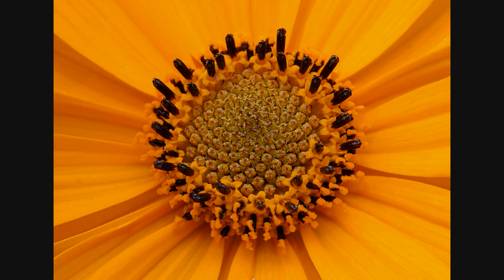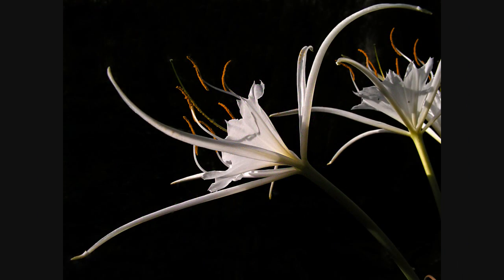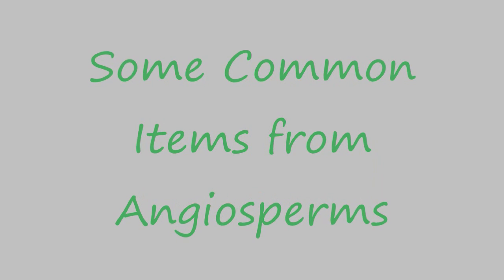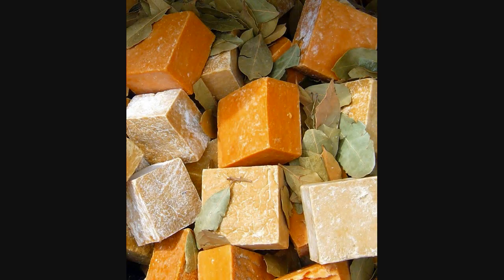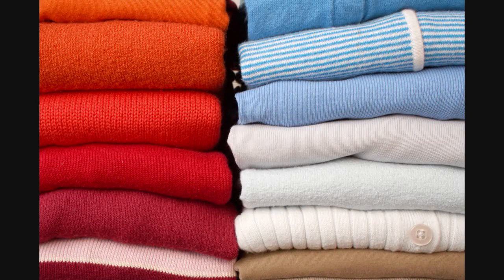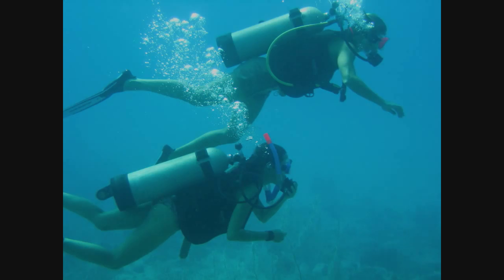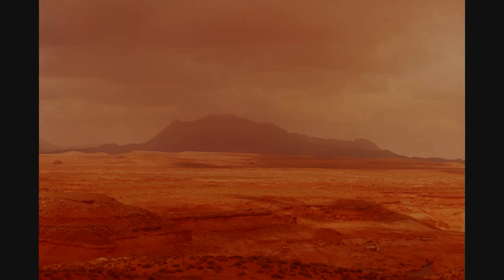We have seen how angiosperms provide us with fruit and flowers, but what else do they do for us? The list is almost endless — life without flowering plants would be pretty empty. Here are just a few examples of the many items we use every day that come from flowering plants: food, drinks, soaps and perfumes, clothing, furniture, and medicine. And let's not forget about oxygen — plants produce the oxygen we need to breathe, and since angiosperms make up about 80% of the plants on Earth, life without them would be pretty impossible.